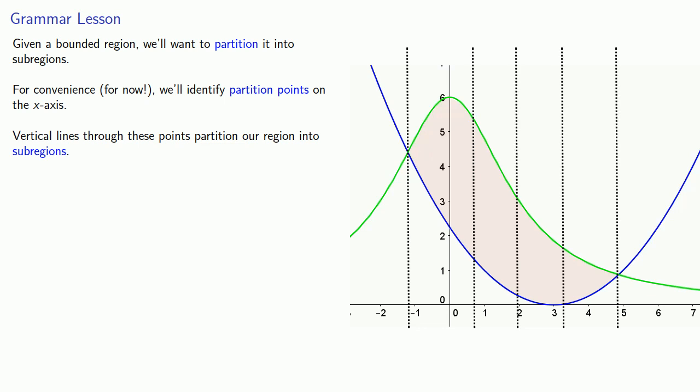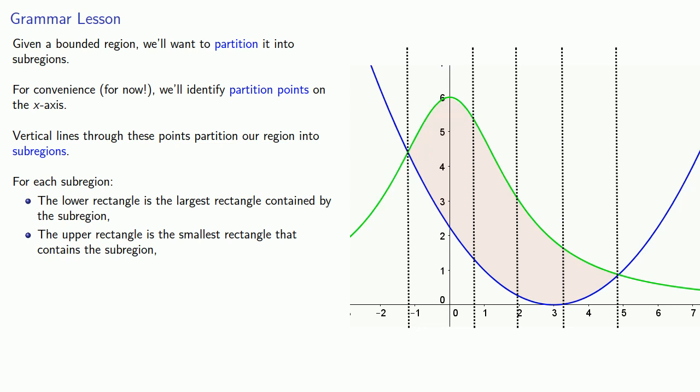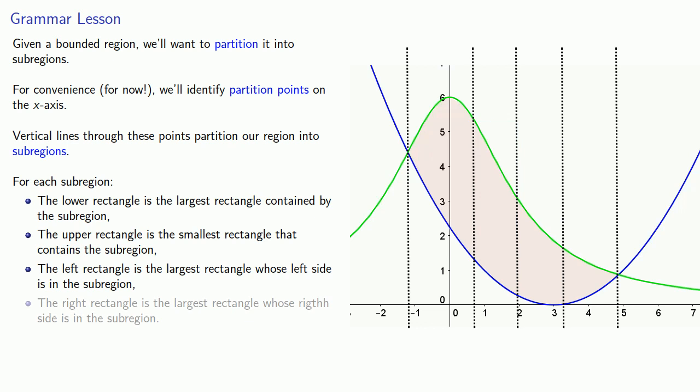And for each of our subregions, the lower rectangle is the largest rectangle contained by the subregion. The upper rectangle is the smallest rectangle that contains the subregion. The left rectangle is the largest rectangle whose left side is in the subregion, and the right rectangle is the largest region whose, wait for it, right side is in the subregion.